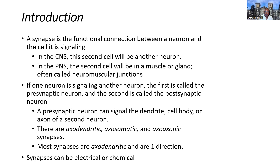A synapse is a functional connection between a neuron and another cell that is being signaled. This cell can be another neuron, or it can be a peripheral nervous system structure such as a muscle or gland, or at a skeletal muscle specifically, where we call this the neuromuscular junction.